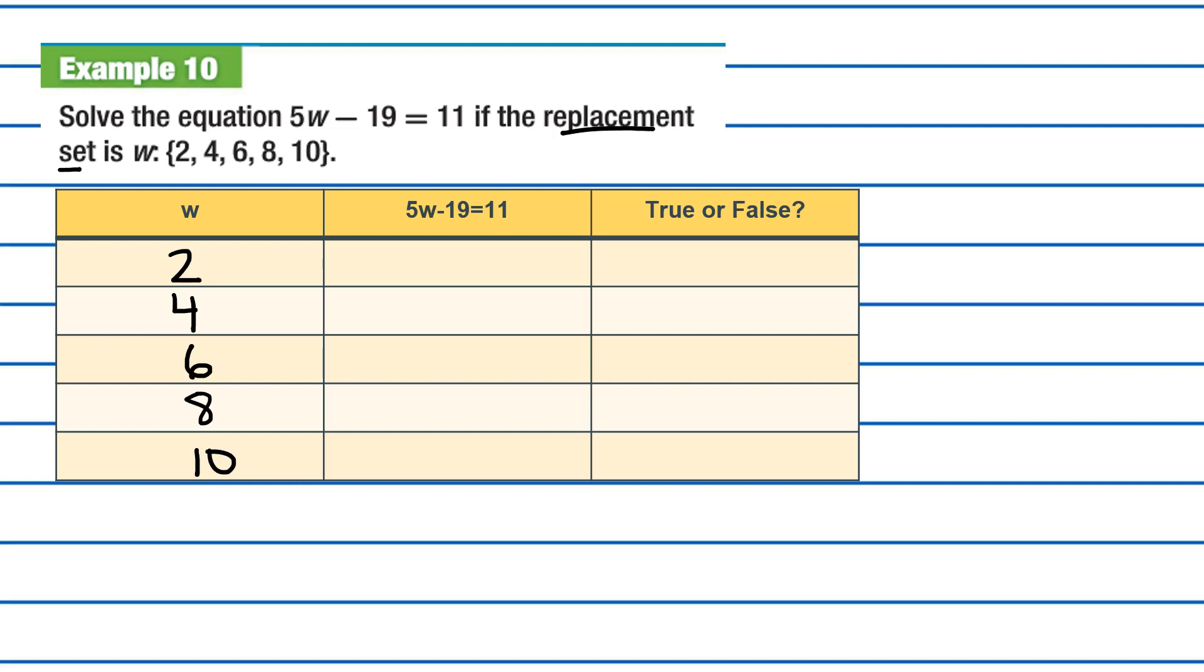Only those. So, in this case, we want 5. Remember, we're going to substitute it in times 2, in this case, minus 19 is equal to 11. And our question is, is this a true statement? Well, 5 times 2 is 10. 10 minus 19, does that equal 11? Well, it does not. Because of that, we know it is false.